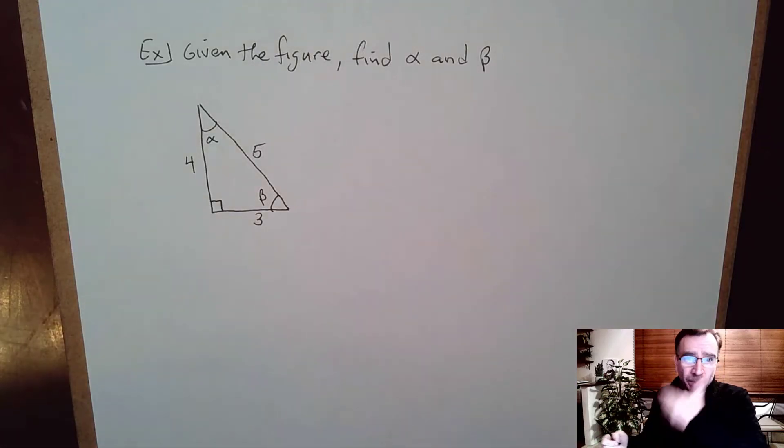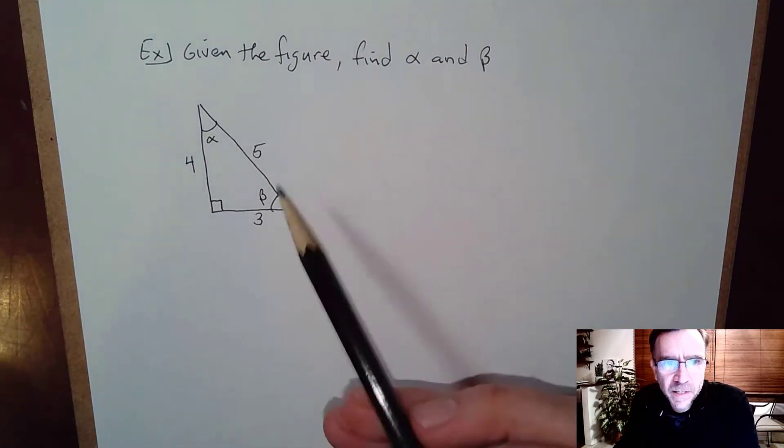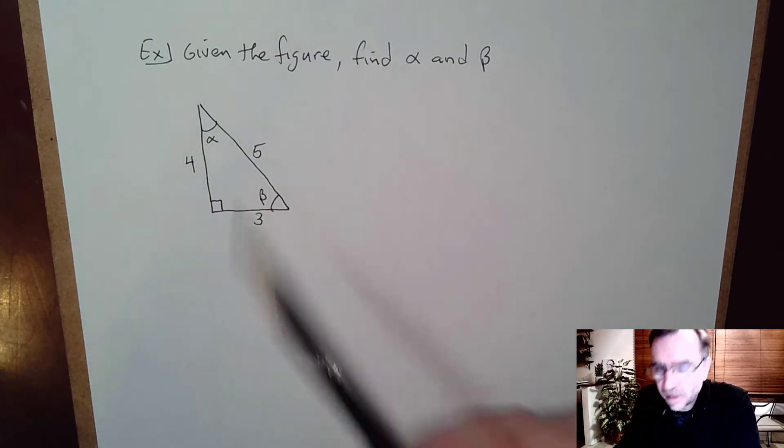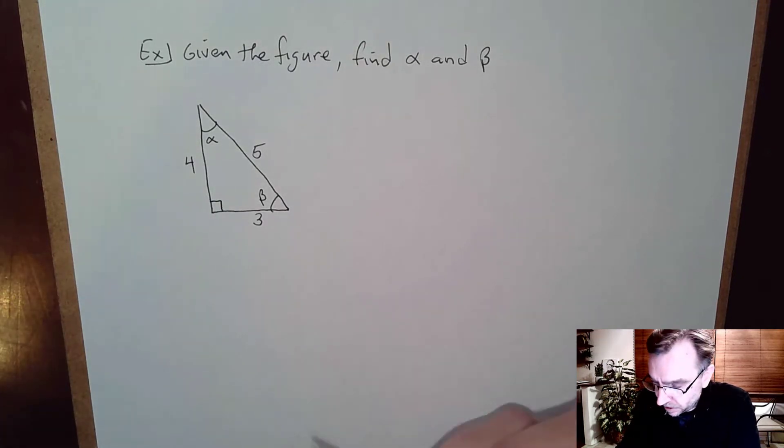In this video, I want to do a couple examples. The first one here says given the figure find alpha and beta, and the figure here is basically a 3-4-5 right triangle. But this time we want to find the angles.